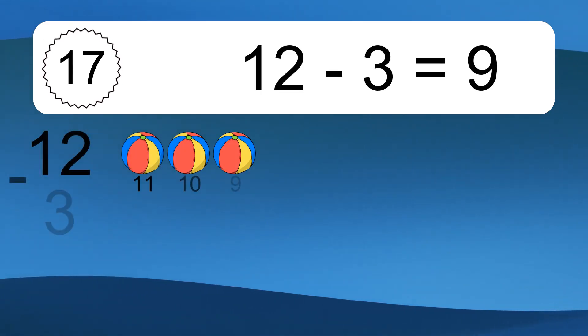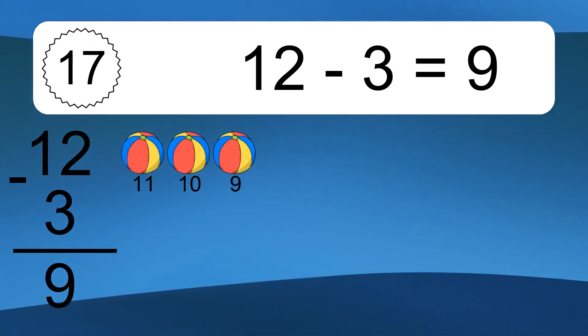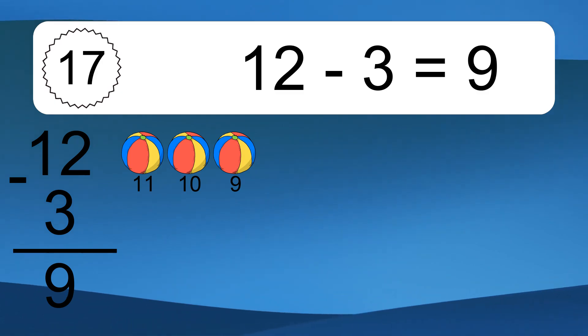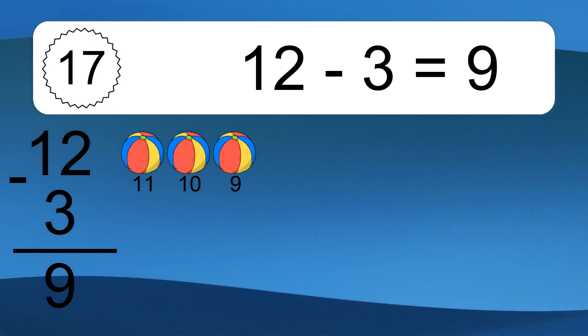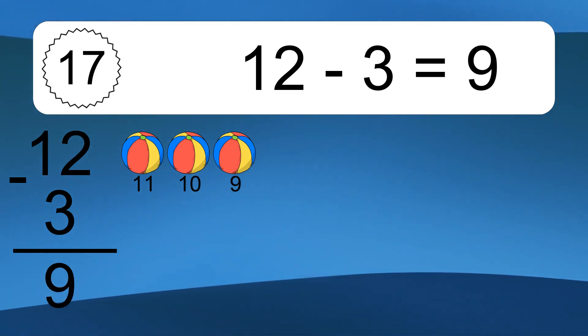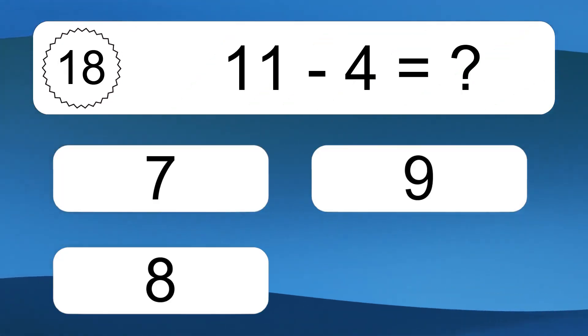12 minus 3 equals what? 12 minus 3 equals 9. Let's count it. 11, 10, 9.